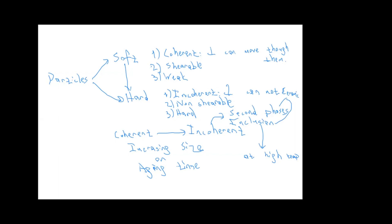So the question is: how can dispersed particles influence the strength? The methodology is always the same — anything that blocks the movement of dislocations is a hardening mechanism. Dispersed particles can increase the strength of a solid by impeding dislocation motion. If we impede the movement of dislocations, we have hardening.